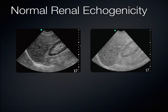Normally, the cortex of the kidney is less echogenic than the next-door neighbor — the liver on the right, or the spleen on the left. If you can make out that the renal cortex is slightly less echogenic than the adjacent organ, then you can appreciate the subtleties of gain.